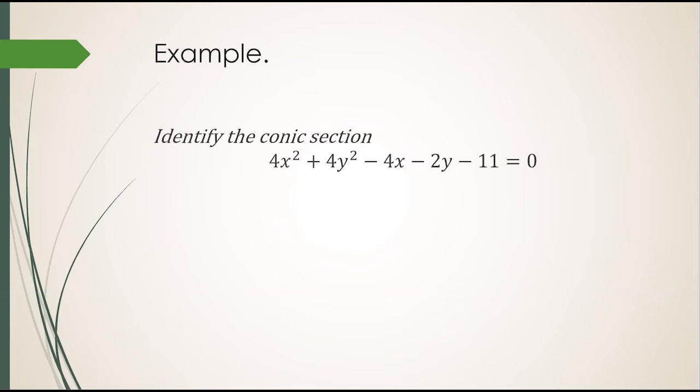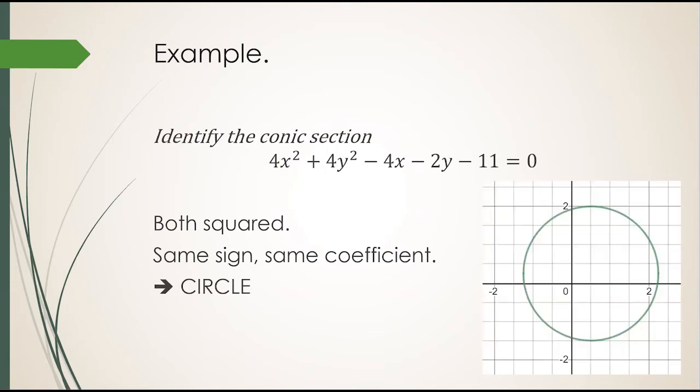All these variables are already on one side, so I don't need to move them. Both x and y are squared. Their coefficients have the same sign, same coefficient. So that makes it a circle. And here it is on Desmos.